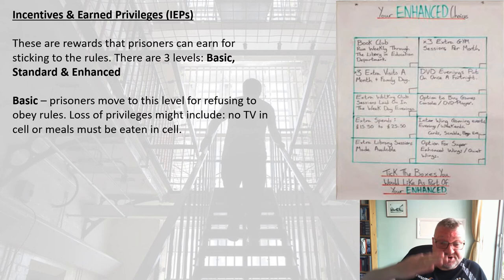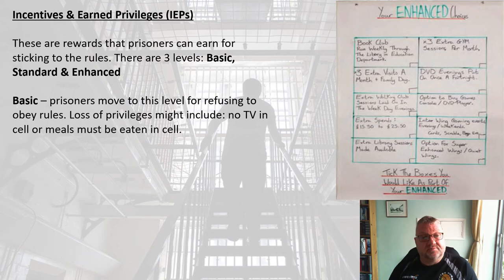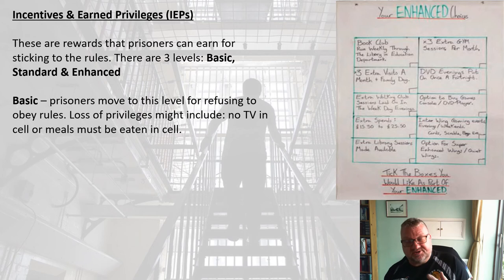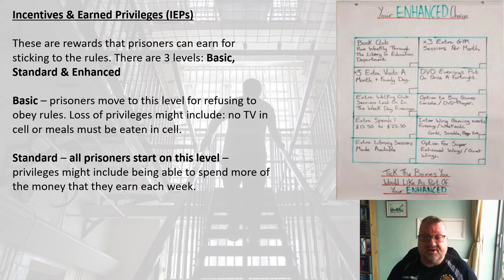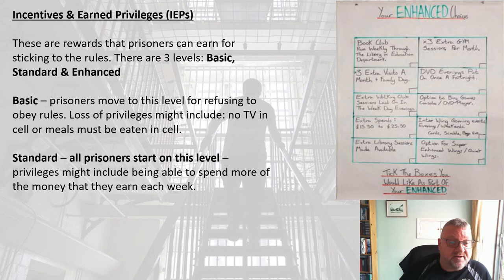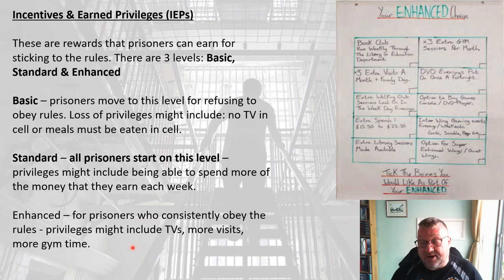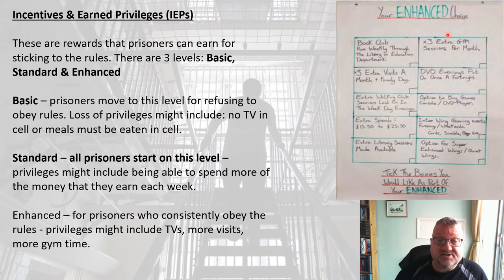If prisoners refuse to obey the rules they lose privileges, moving from standard to basic — losing things like TV in the cell, being required to eat meals in the cell, and not being allowed to associate with other prisoners. Standard level prisoners may be able to spend more money each week. Enhanced status, for those who consistently obey the rules, includes privileges such as use of TVs, more visits, and more gym time.